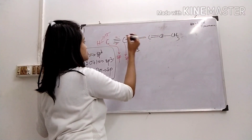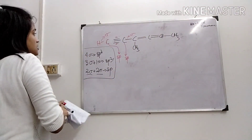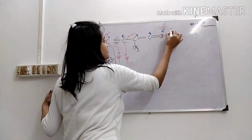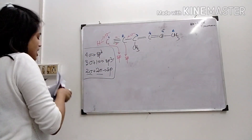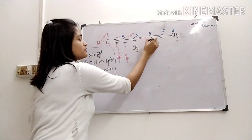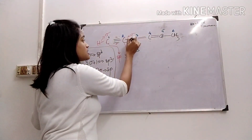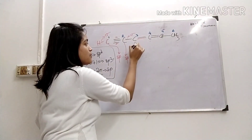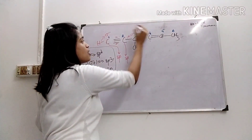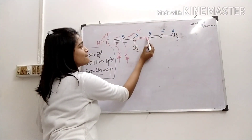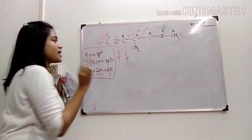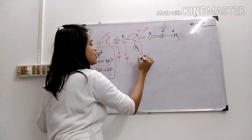Now the third carbon — carbon one, two, three, four, five, six. The third carbon is involved in one sigma bond with the fourth carbon, one sigma bond with the second carbon, and one sigma bond with the methyl group carbon. That gives three sigma bonds. There is also a pi bond between carbons three and four. So three sigma and one pi makes this carbon sp2 hybridized.